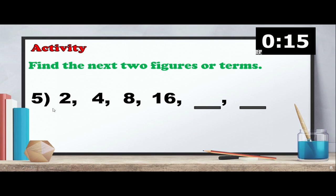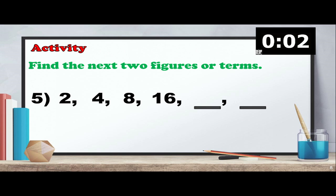For number 5, the last activity question, we have 2, 4, 8, 16. You have 15 seconds to find the next two terms. The correct answer is 32 and 64. We'll discuss that later.